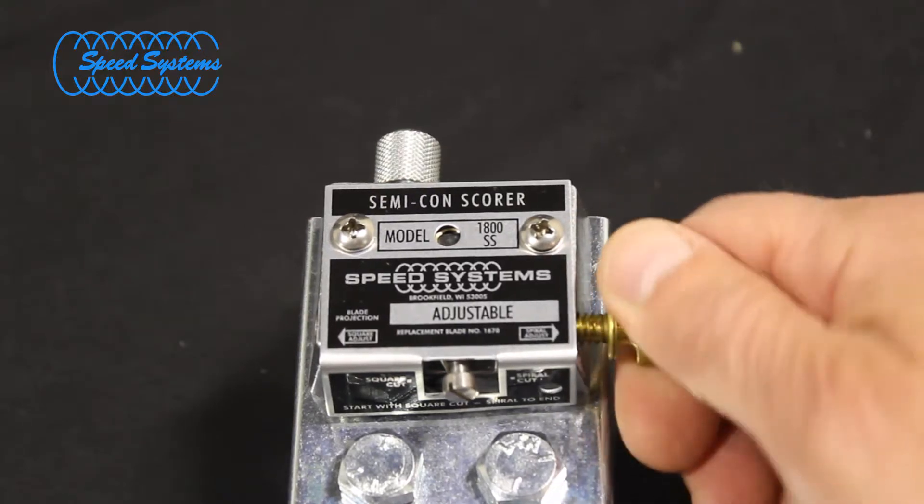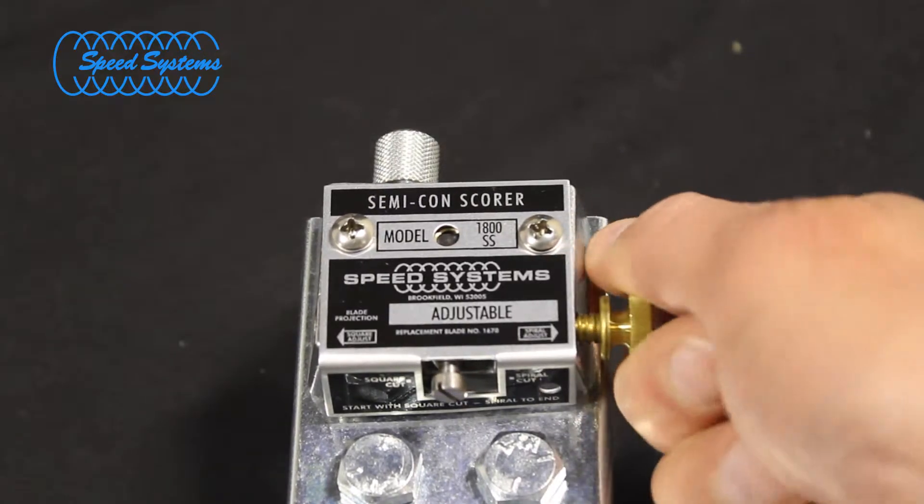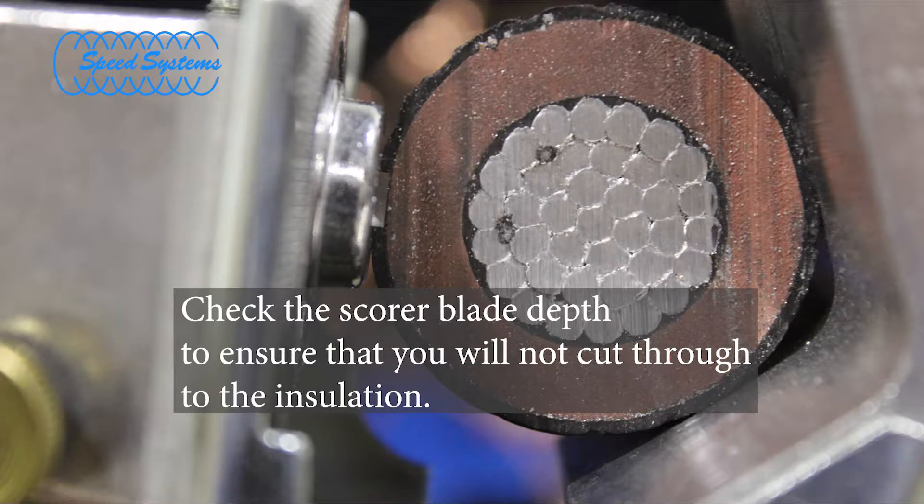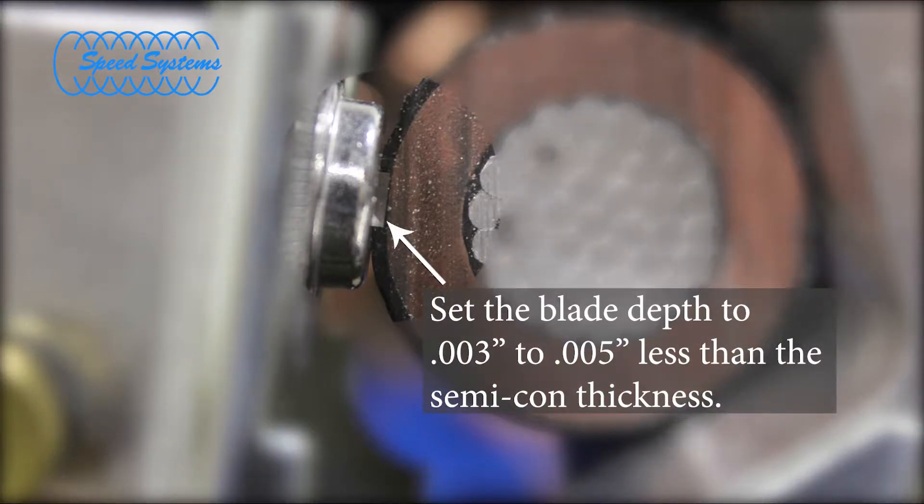Verify that the blade lever is in the square cut position and check the blade depth on a scrap piece of cable if one is available, or by visually checking the blade at the end of the cable. The blade depth should be set to approximately 3 to 5 thousandths of an inch less than the Semicon thickness.